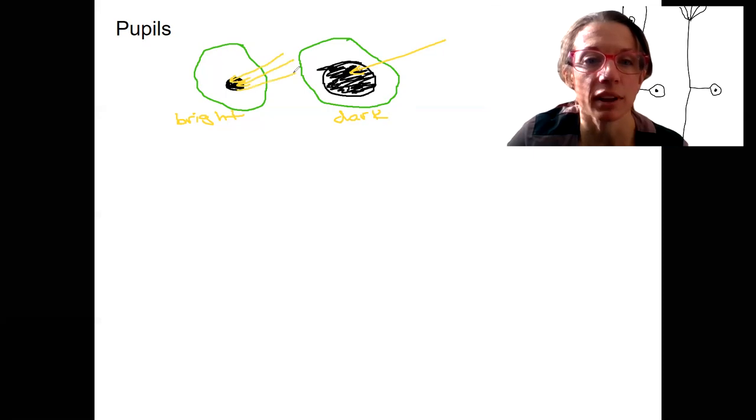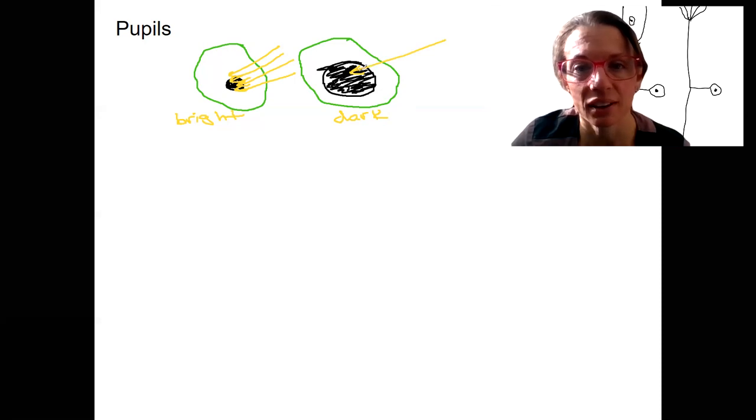And this is a reflex response to regulate how much light enters the eyes. It can be damaging to your eyes to have too much light enter. So this keeps too much from entering the eyes and allows you to see better in dark conditions.